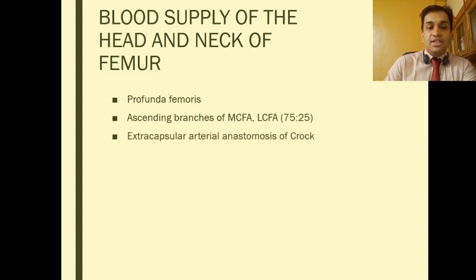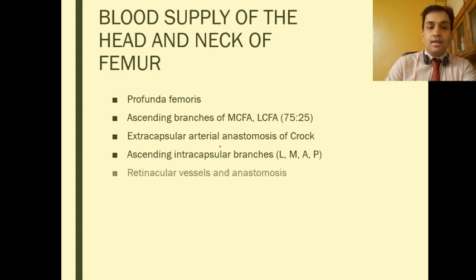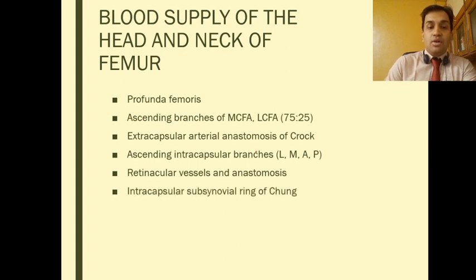They form the extracapsular arterial anastomosis of Croc, giving ascending intracapsular branches — lateral, medial, anterior, and posterior — of which the lateral branch now carries 75% of the blood supply.